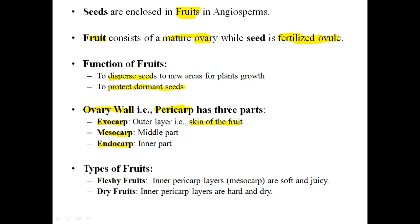There are different types of fruits, but generally they can be divided into fleshy fruits and dry fruits. In fleshy fruits, the mesocarp — the inner pericarp layer — will be soft and juicy, while in dry fruits the mesocarp layers will be hard and dry.